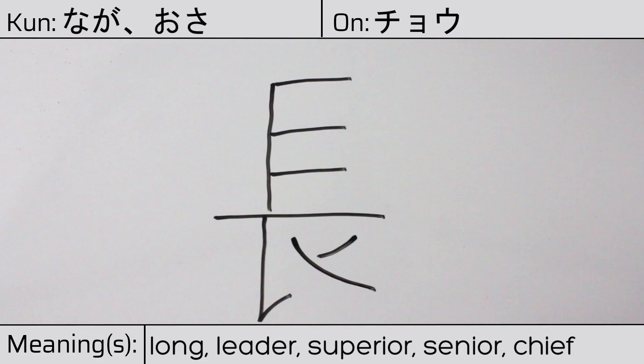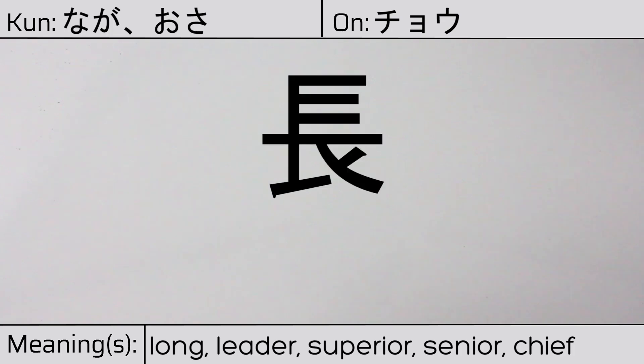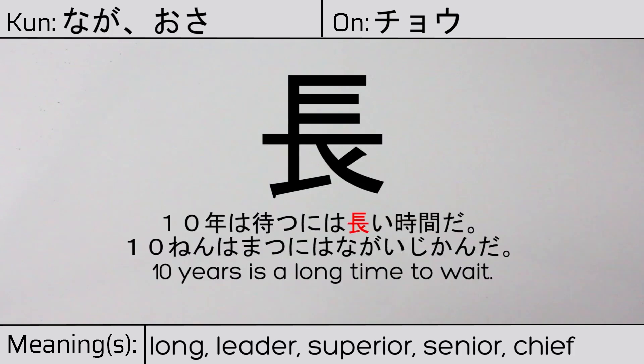You can remember this kanji by the fact that it looks like a hairbrush — you can think of it as running through a person's long flowing hair. Our example sentence is: 10 years is a long time to wait.